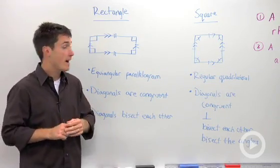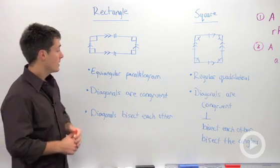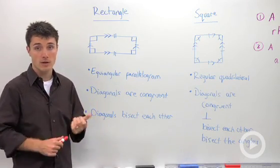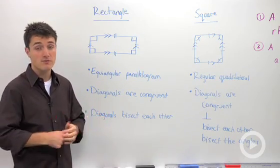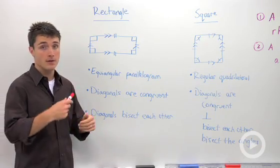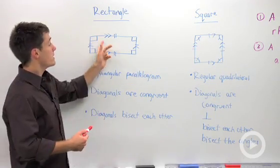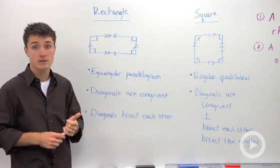So the key facts about a rectangle: it's an equiangular parallelogram, which is another way of saying if you have 360 degrees and four congruent angles, then each of these angles must be 90 degrees.